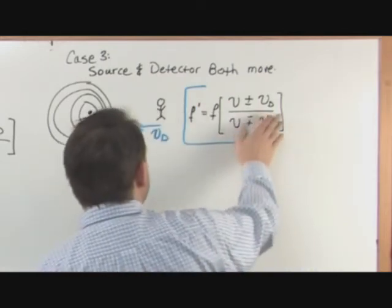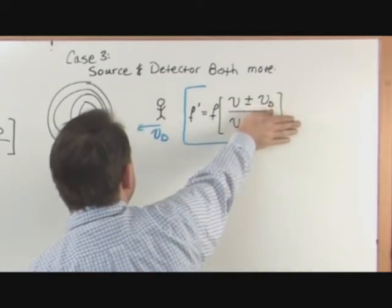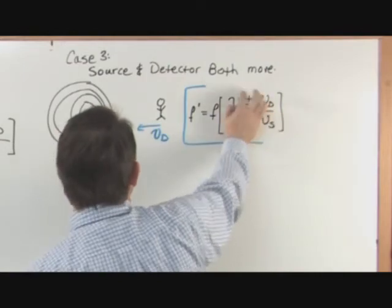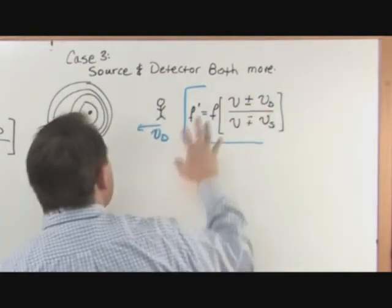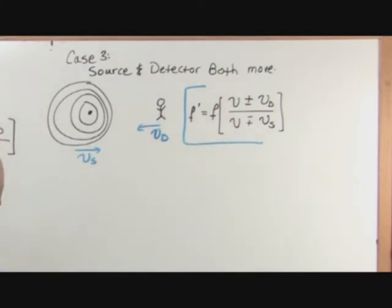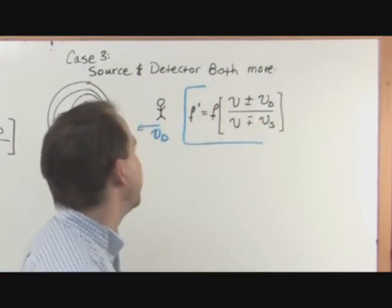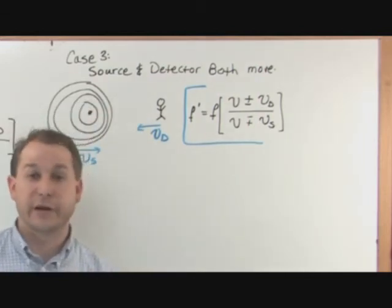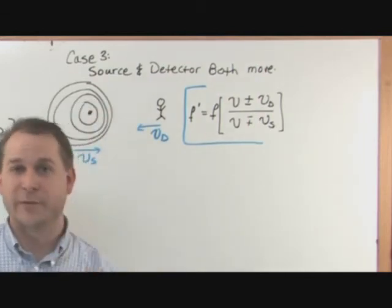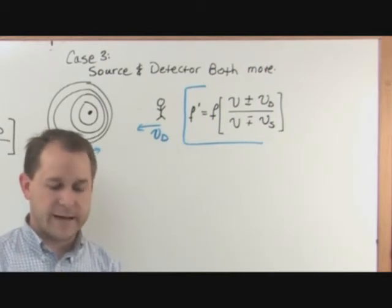And if you have the source, which is not moving, which is this guy right here, and the detector is the only thing moving, you're going to get this, which is exactly what we wrote here. So really, if you just use this problem, and if the detector or the source happen to be stationary, just put a zero in the appropriate place, you'll always get the right answer, and you'll never get confused. And there'll only be one equation to memorize or to write down your little sheet for your test.